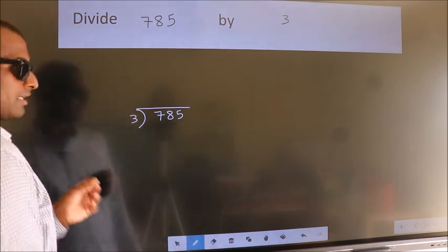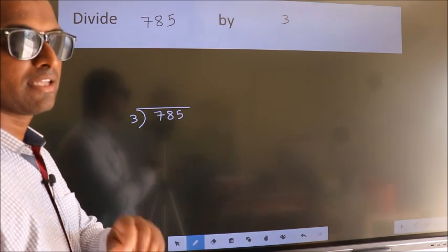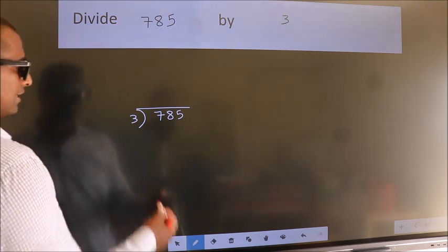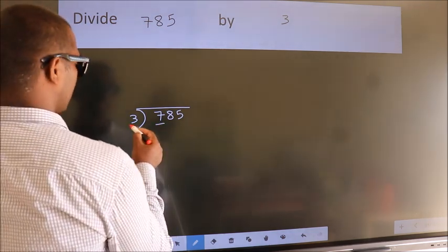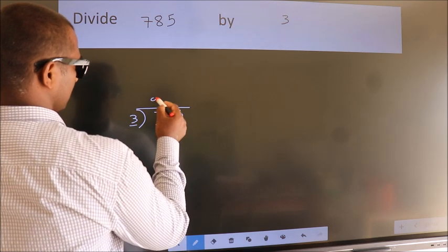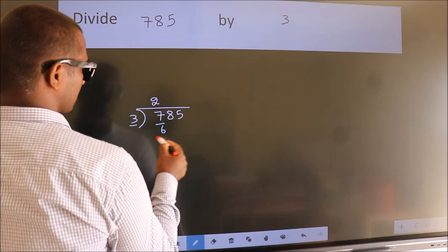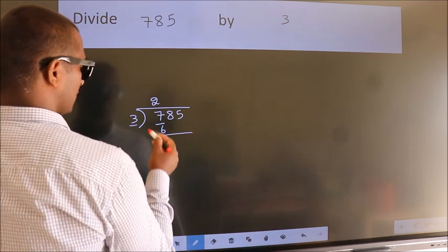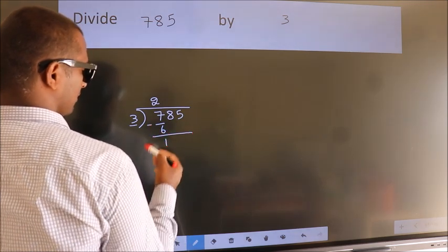This is your step 1. Next, here we have 7, here 3. A number close to 7 in the 3 table is 3 times 2, which is 6. Now, we should subtract. We get 1.